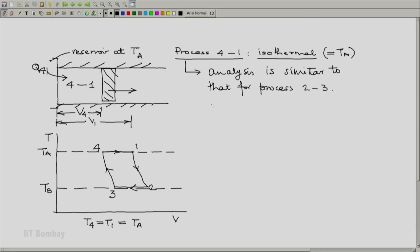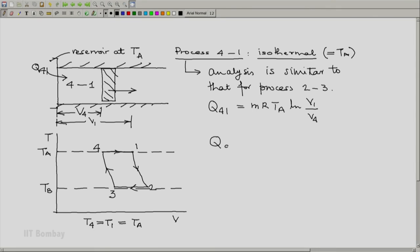Using the same set of arguments with just a change in the states associated with that process, we will get Q4-1 equal to MR TA logarithm of V1 by V4. And for our engine calculations, we need the heat absorbed by the system. So we will get heat absorbed by the system equal to MR TA ln V1 by V4.